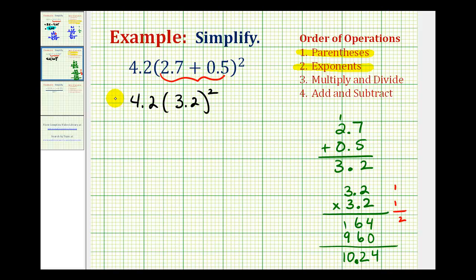So now we have 4.2 times 10.24. So we have one more product to determine, and to do this, it's going to be easier if we change the order of this. Remember, due to the commutative property of multiplication, changing the order here does not affect the product. So when we set this up, we're going to have 10.24 times 4.2.